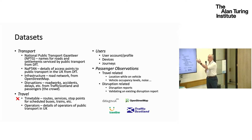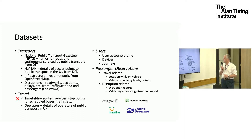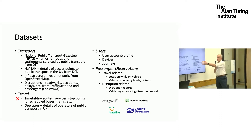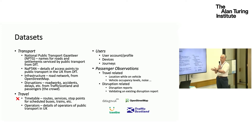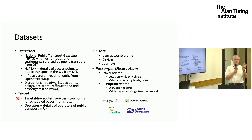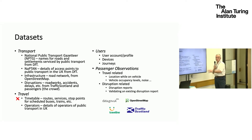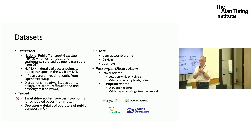We were interested in user information, including information about devices and the journeys people were making, with concerns about privacy. We were interested in what passengers could tell us about their journeys and the travel network. Could they tell us occasional location information when they were on a vehicle? We weren't interested in tracking them every single moment, but would they agree to give occasional updates on their location to help us identify how vehicles were moving in the network? We were also interested in whether they could give us disruption reports to tell us when things were going wrong.